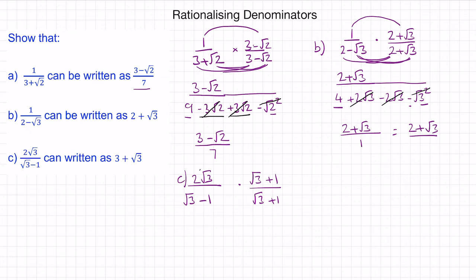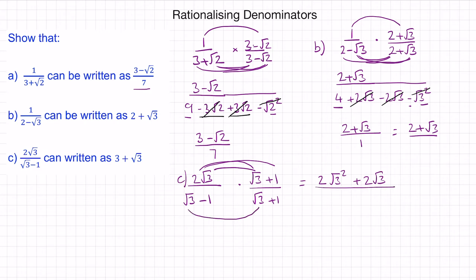So now we have 2 root 3 times root 3 on our numerator. And root 3 times by itself is root 3 squared. And then 2 root 3 times 1 is just 2 root 3. And for our denominator, root 3 times by itself is root 3 squared. Then we have root 3 times 1, which is just root 3, minus root 3.